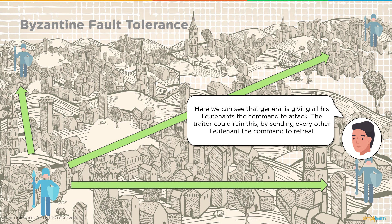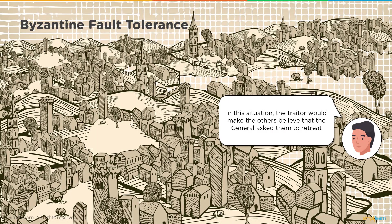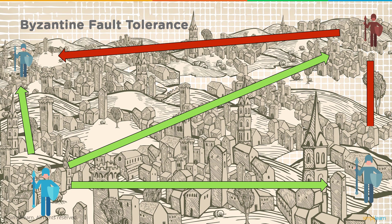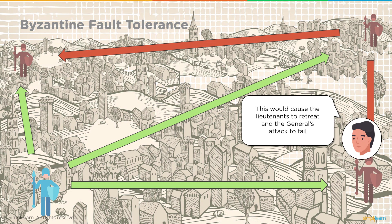The general gives all his lieutenants the command to attack. The traitor could ruin this by sending every other lieutenant the command to retreat — the opposite. In this situation, the traitor makes others believe the general asked them to retreat. The lieutenant in brown is the traitor, and he communicates wrong information to other lieutenants, making them act as traitors themselves. This would cause the lieutenants to retreat and the general's attack to fail.